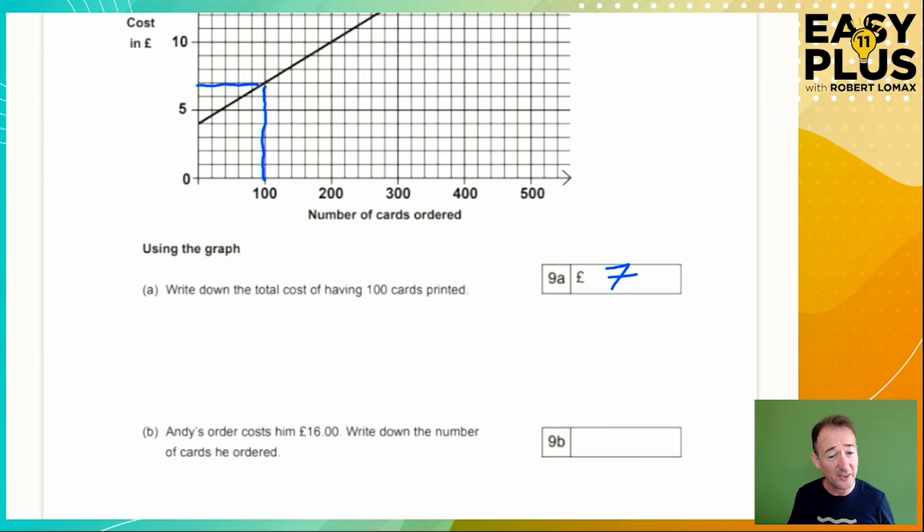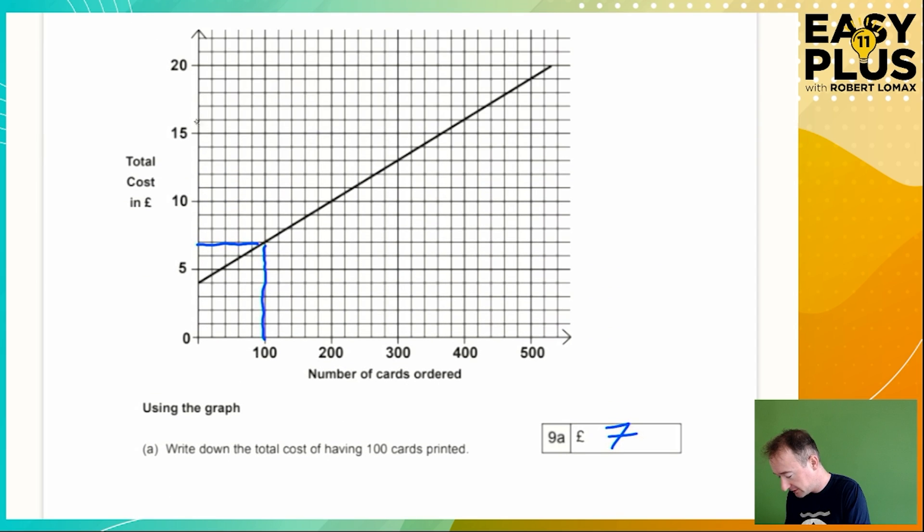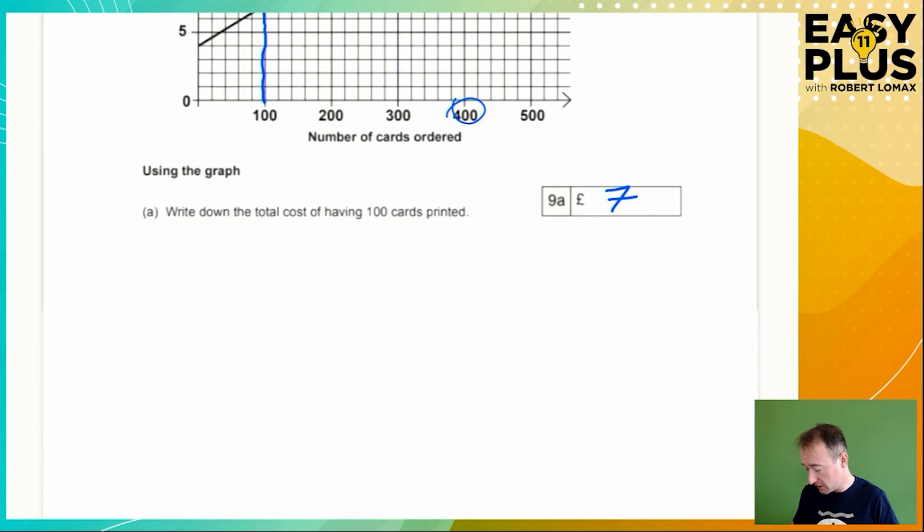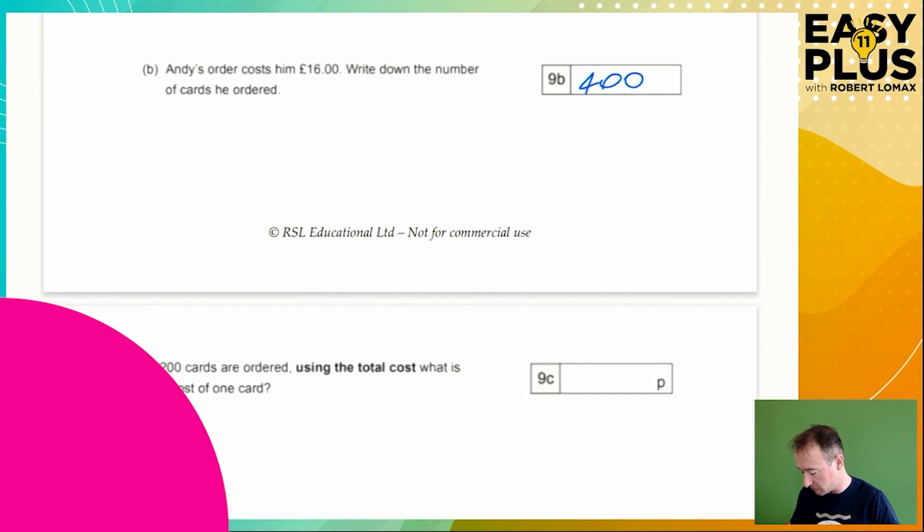Andy's order costs him £16. Write down the number of cards he ordered. So now we're working in the other direction. We're starting from the price, which is £16 on the price axis. We're going across to the line and we're going down to the number of cards. So if you spend £16 in total, you're going to get 400 cards. Nice and straightforward. These are kind of warm-up questions to get you used to using the graph.